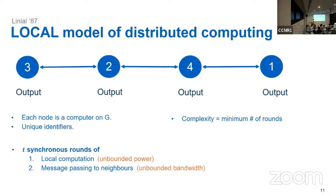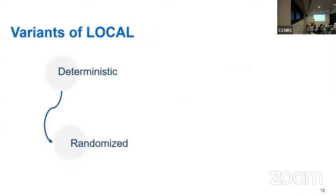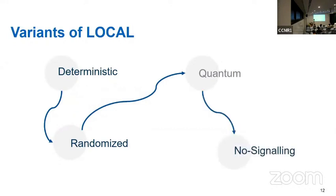What we're interested in is the complexity, which is the minimal number of rounds of computation and communication before a proper solution is reached. In the local model, the computational power is unbounded locally, and the bandwidth, the size of the message that can be communicated, is also unbounded. So what I've introduced to you is the deterministic model. In the randomized model, it's basically the same thing, but the players are allowed to flip coins to have some private randomness.